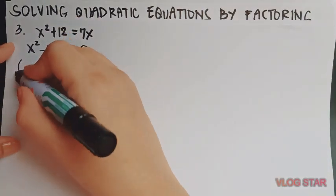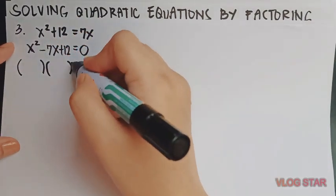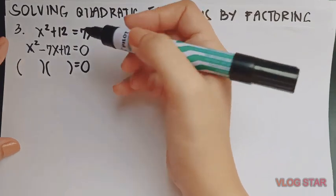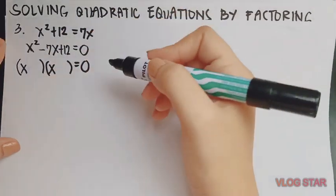So again, we have to write the parentheses. Factor x squared, so those are x and x.